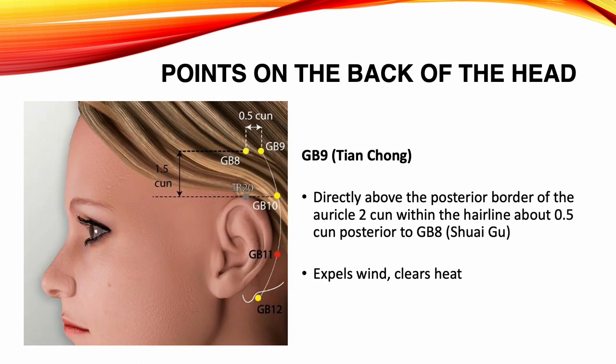Gallbladder 9, Tian Chu. Location: directly above the posterior border of the auricle, within the hairline, about 0.5 Sun posterior to Gallbladder 8. Functions: expels wind, clears heat. Indications: headache, vertigo, toothache, seizure, hyperthyroid.